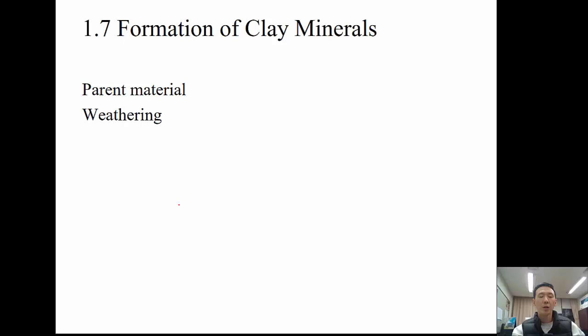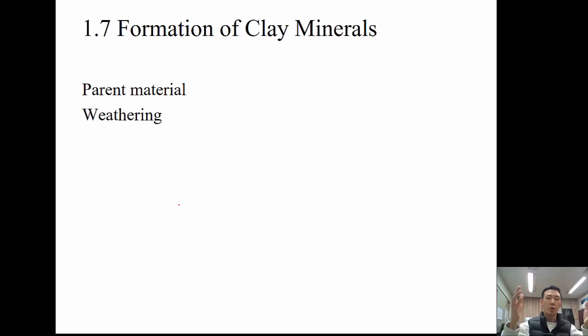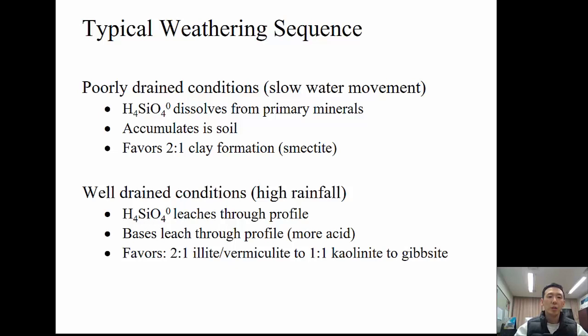How clay minerals form depends on parent rock material and weathering conditions — pH, water availability, and reaction time all affect the resulting product. In poorly drained conditions, water movement is slow, silicate accumulates in the soil, and 2:1 clays such as smectite and montmorillonite form preferentially. In well-drained conditions, bases leach through the profile, the environment becomes more acidic, and the sequence favors 2:1 illite/vermiculite to 1:1 kaolinite and gibbsite.